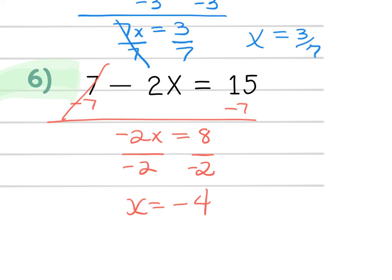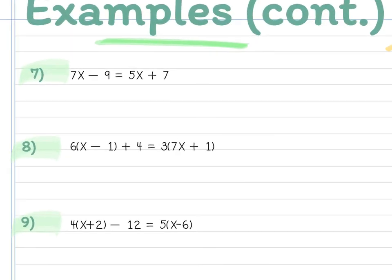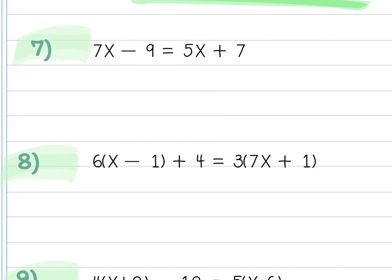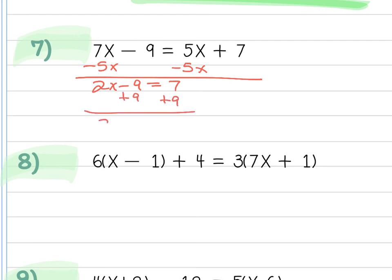At any point if you're uncertain, remember you can always plug the variable's value back into the original equation. For the next problem, we need to get our variables together and constants together. I'll move the 5x to the left by subtracting it, leaving 2x - 9 = 7. Add 9, so 2x = 16. Divide by 2, and x = 8.